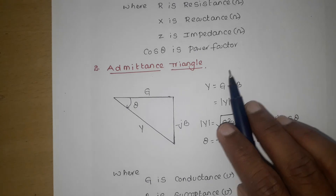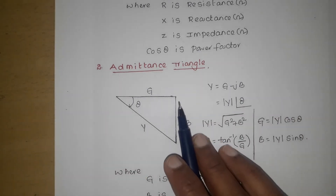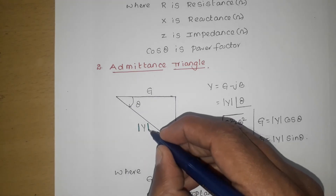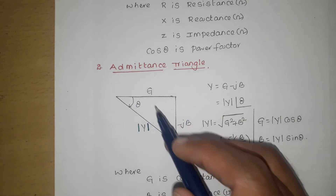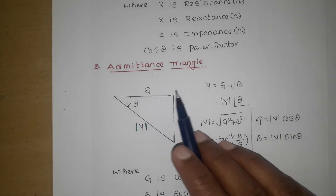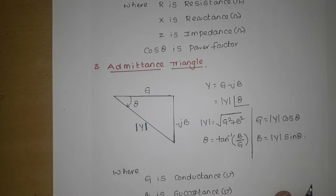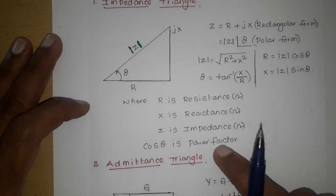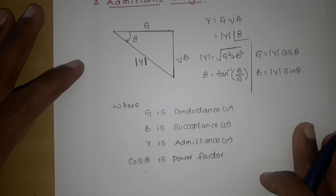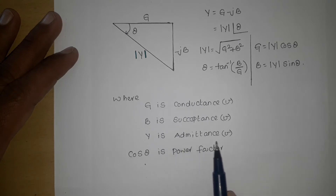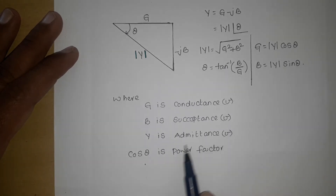If we express this in the form of a diagram: G minus jB, and mod Y is the resultant of G and B. Theta is the angle made by mod Y with the reference. This is the admittance triangle, which is a right angle triangle. Here resistance, reactance and impedance have unit ohms, and cos theta is power factor. G is conductance, B is susceptance, and Y is admittance with unit mho or siemens. Cos theta is power factor.